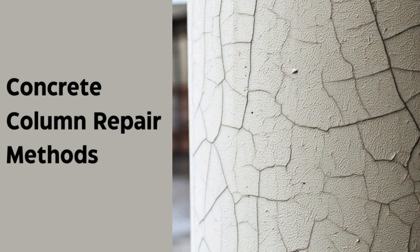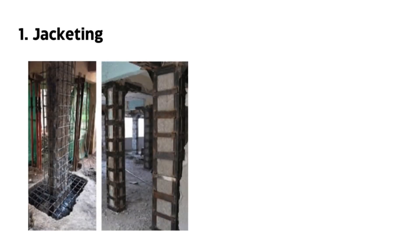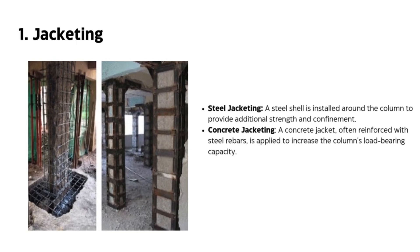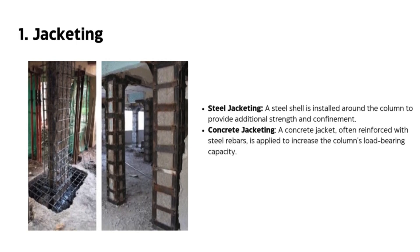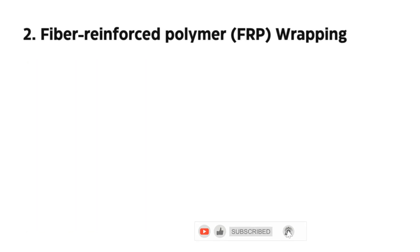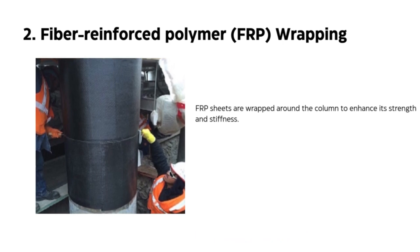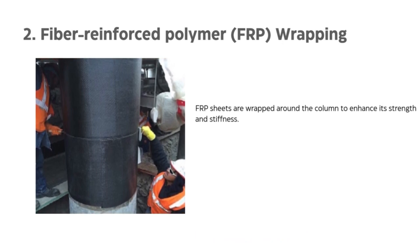Concrete column repair methods include: jacketing — steel jacketing, where a steel shell is installed around the column to provide additional strength and confinement; concrete jacketing, where a concrete jacket, often reinforced with steel rebars, is applied to increase the column's load-bearing capacity. Fiber-reinforced polymer (FRP) wrapping involves FRP sheets wrapped around the column to enhance its strength and stiffness — this non-invasive method is quick and efficient.